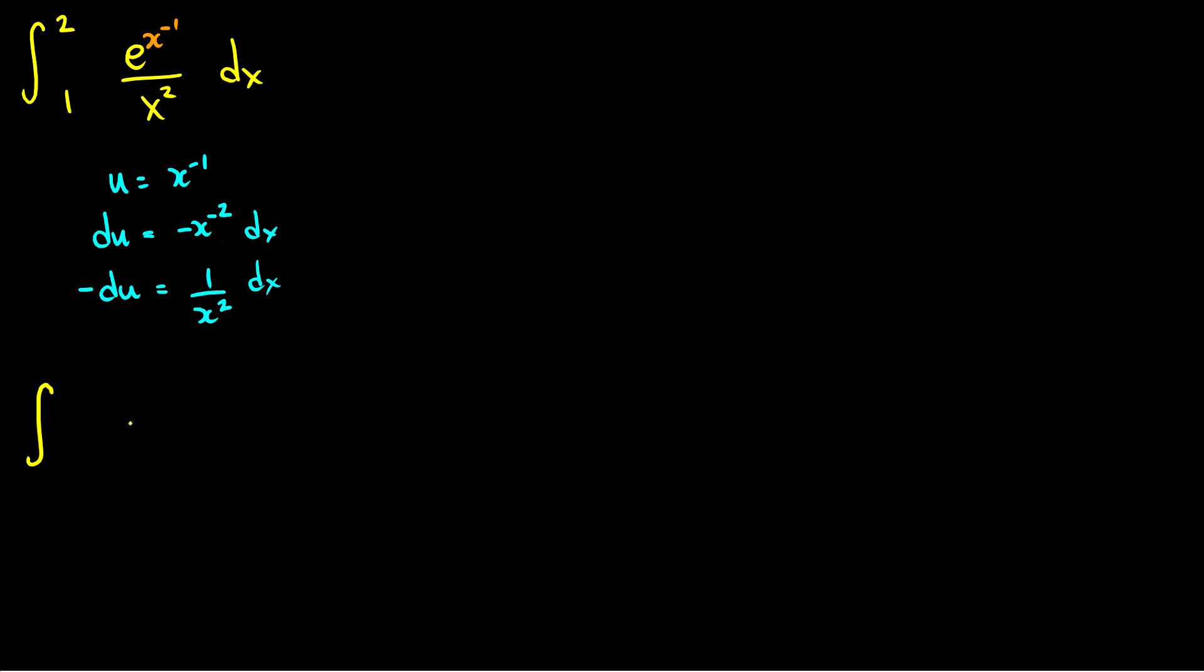So this will be e to the u and then this x squared, well this 1 over x squared dx is taken care of from negative du. So we can put a du here and we can take the negative out front.